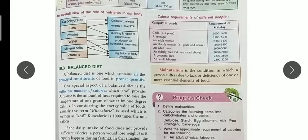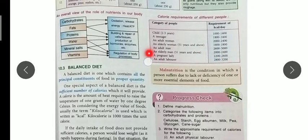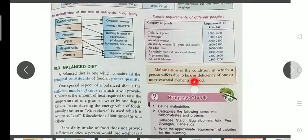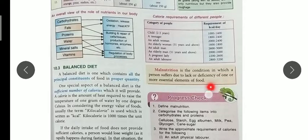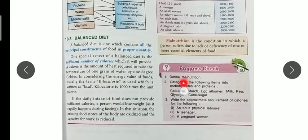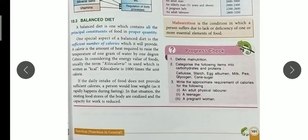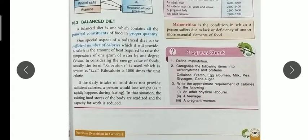Calorie requirements vary from children to adults and laborers — the table shows how many kilocalories different groups need per day, including children, pregnant ladies, and adult men. Malnutrition is a condition in which a person suffers due to a deficiency of one or more essential elements. The progress check asks you to define malnutrition and to categorize items: cellulose and starch are carbohydrates; egg, moon, and milk pea are proteins; glycogen and cane sugar are carbohydrates.